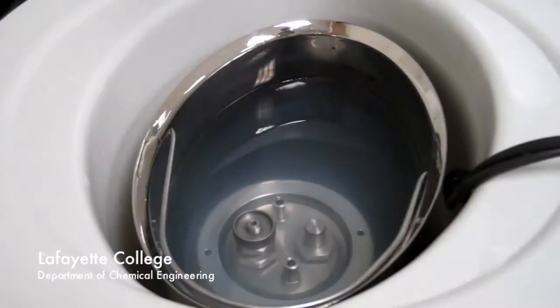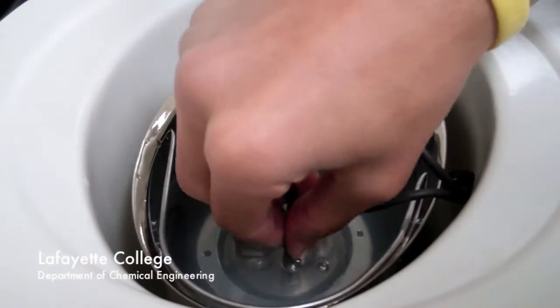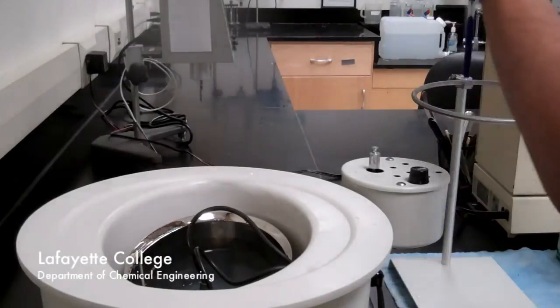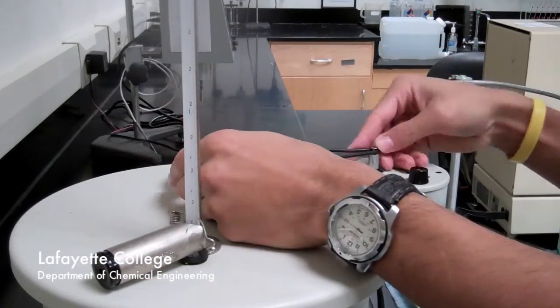Make sure there are no bubbles coming out of the bomb. If there are, you need to start over. Attach the ignition leads to the bomb, being sure to shake any water on your hands back into the bucket. Put the lid on the calorimeter, ensuring the stirrer is rotating freely. Then attach the stirrer to the motor and power it on.